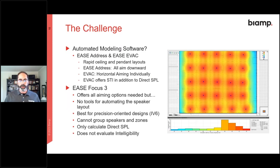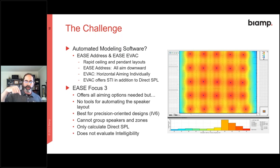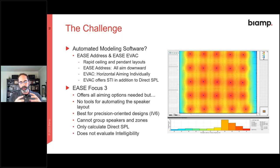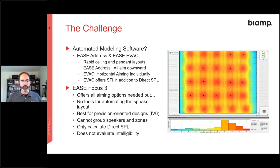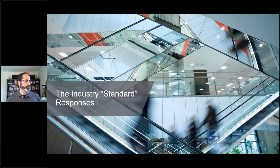You can move faster in programs like EVAC and ADDRESS because they automate the layout, but for the most part they all work with the speakers aimed straight down, which may not be the best way to orient them to get the best coverage and intelligibility. What we wanted was — can we have EASE and ADDRESS feature sets together, in terms of how the speakers are aimed and managed, but still rapidly get to some answers?